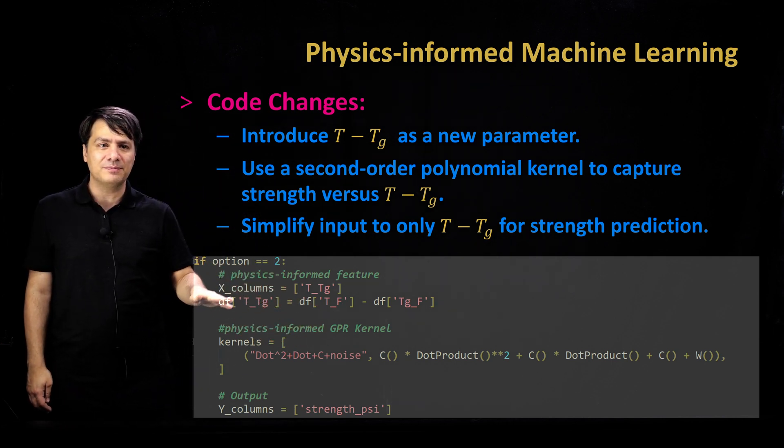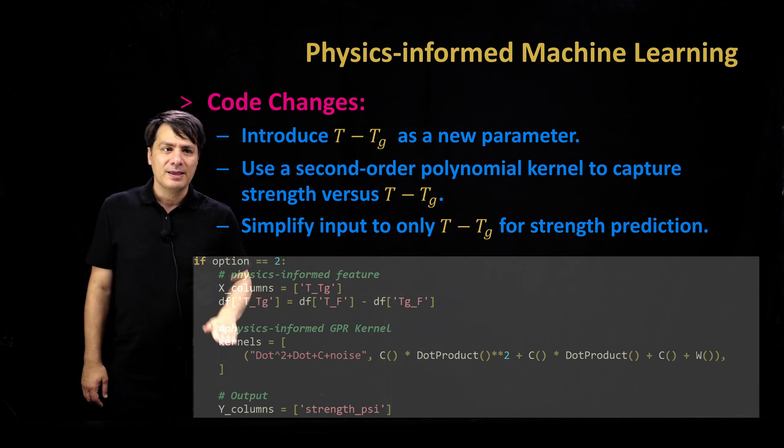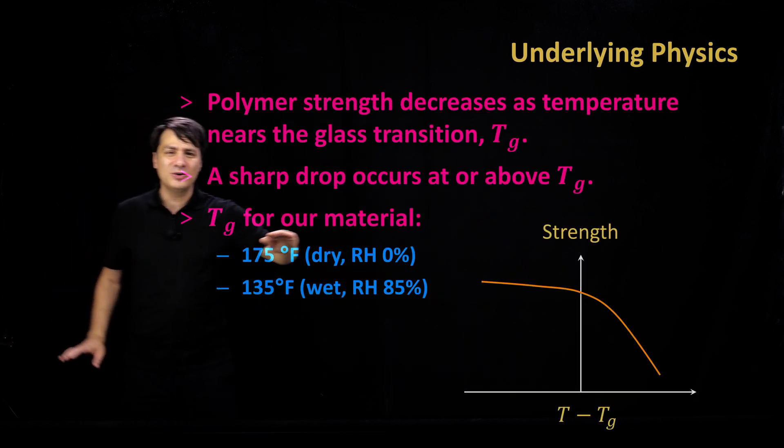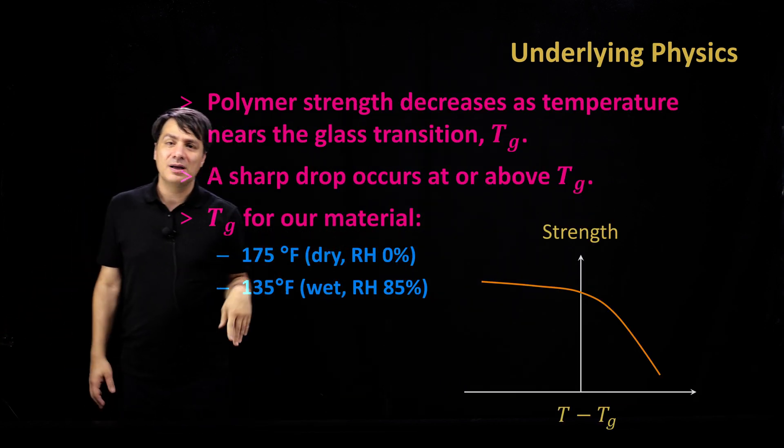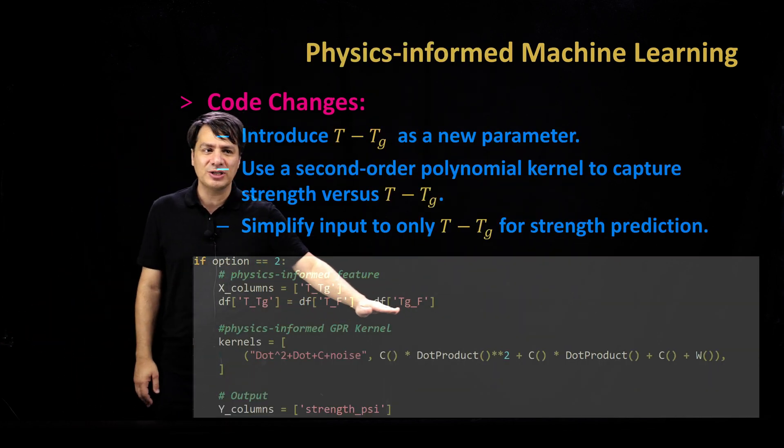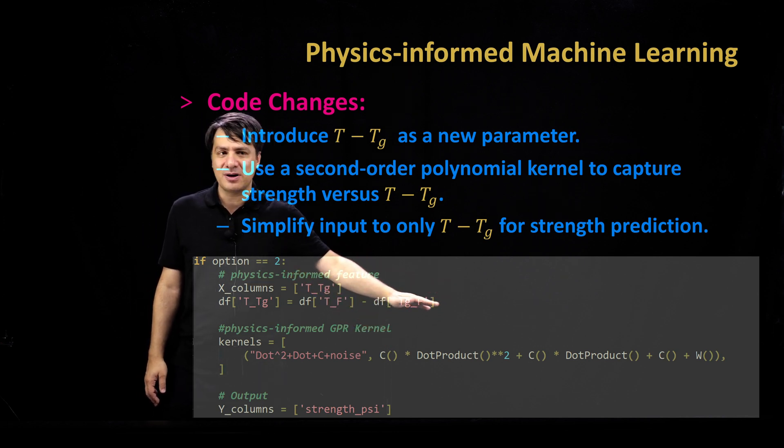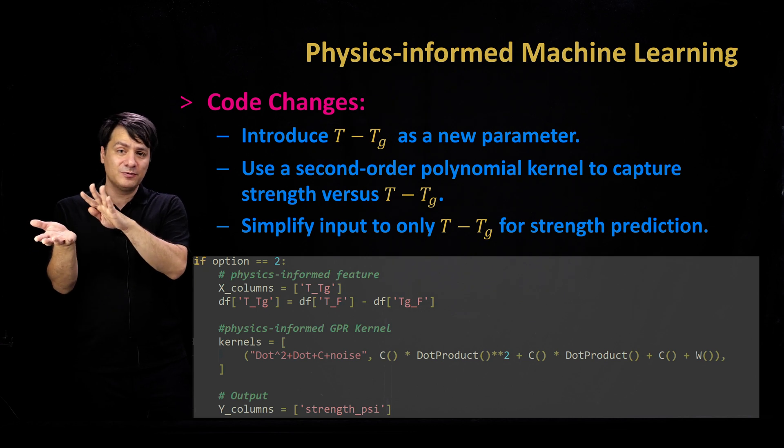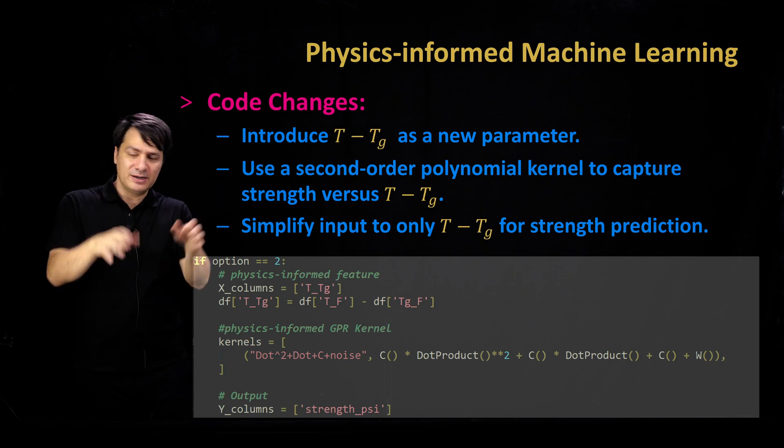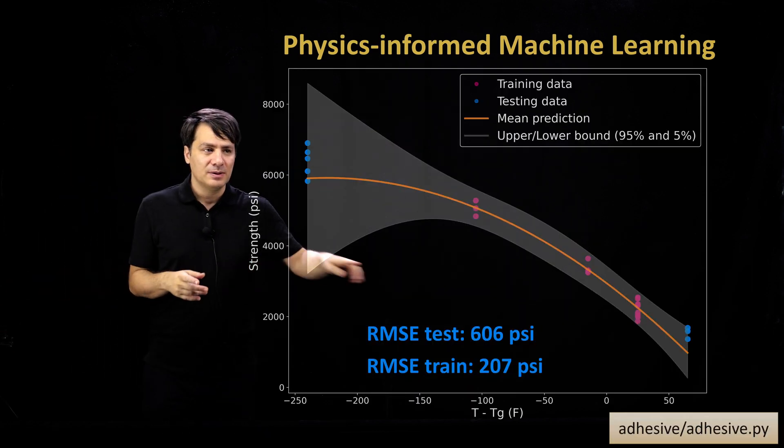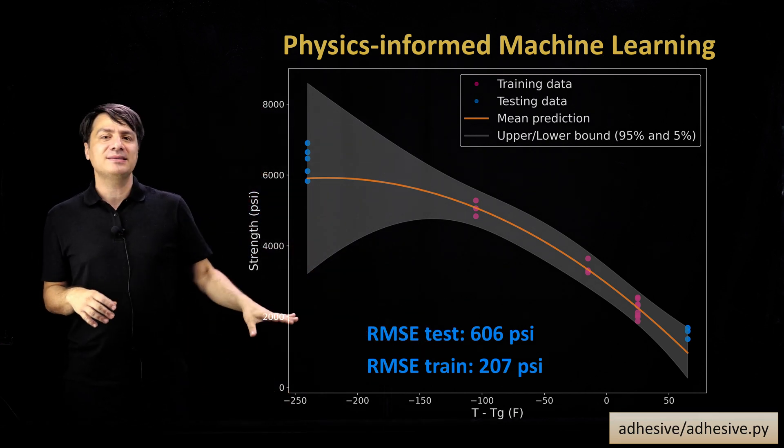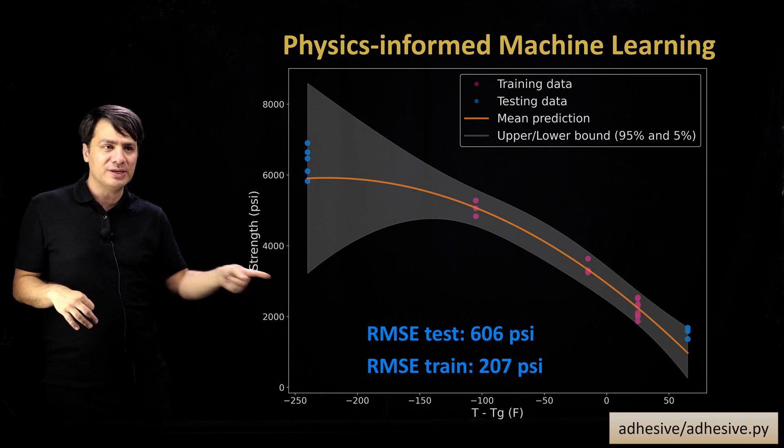That's the first thing we're going to do, and that's simply done by creating a new column in Pandas framework, which is T minus Tg. And then we're going to create a new kernel. From the shape that I introduced here, we kind of know that this is like a second-order polynomial. So we can enforce that understanding, and that is done by saying that I have a second-order equation which is x squared plus x plus constant type equation. So we enforce, we change the inputs. We go from two inputs to one input, and we enforce a known covariance kernel correlation. We go through the same exercise in the adhesive Python file.